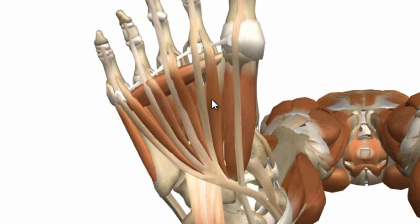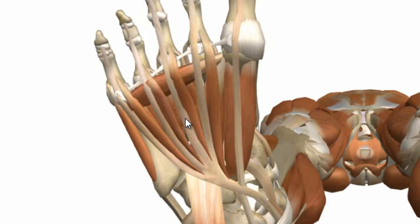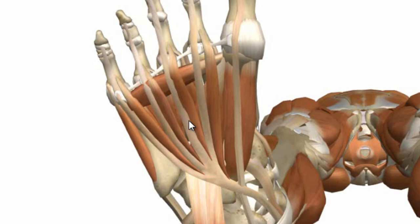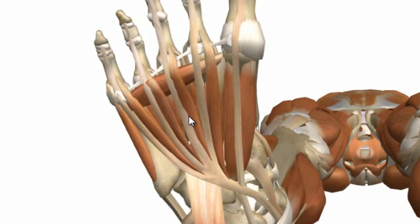Next, the lumbrical muscles — there are four of them. Just like in the hand, they originate from the sides of the flexor digitorum longus tendon (analogous to the flexor digitorum profundus). The first lumbrical originates from the medial side of the tendon to the second toe and has one origin, whereas the other three are bipennate — originating from adjacent sides of the flexor digitorum longus tendons.